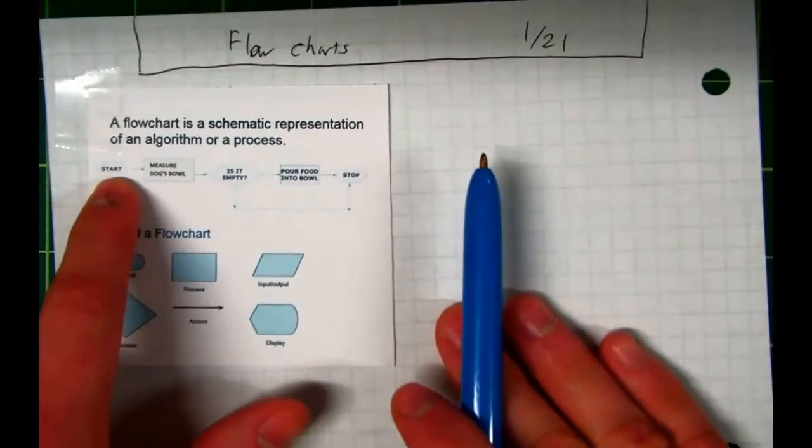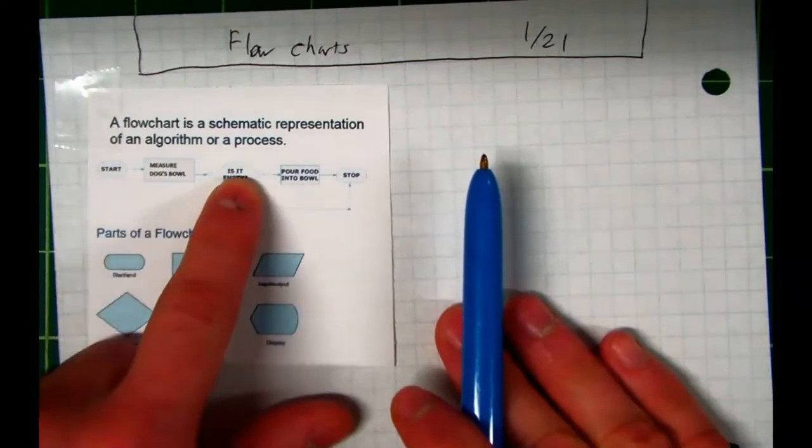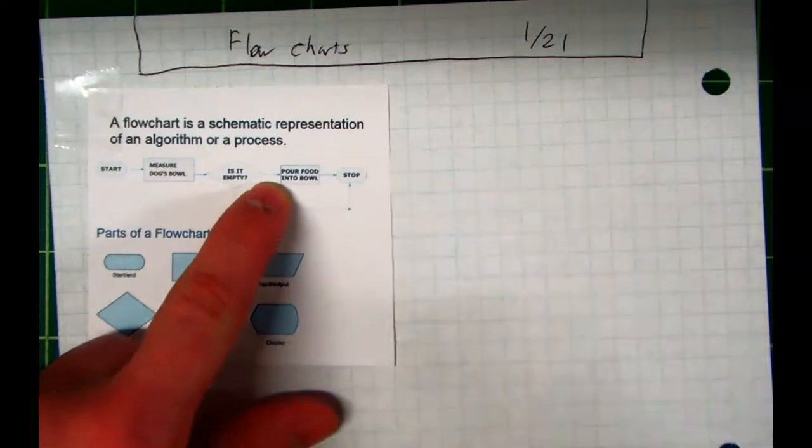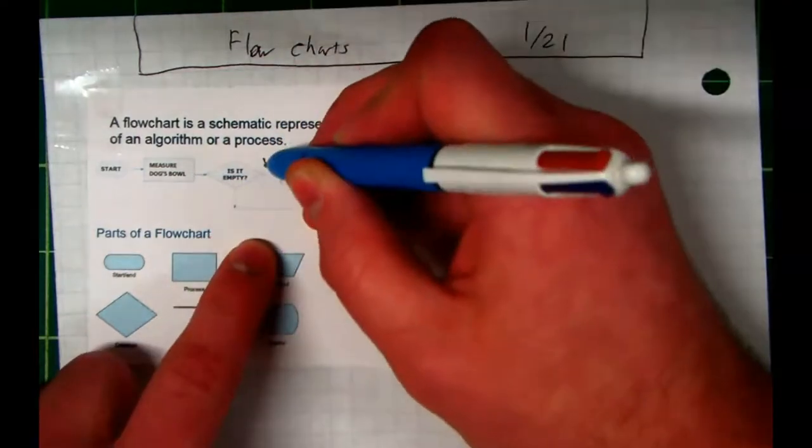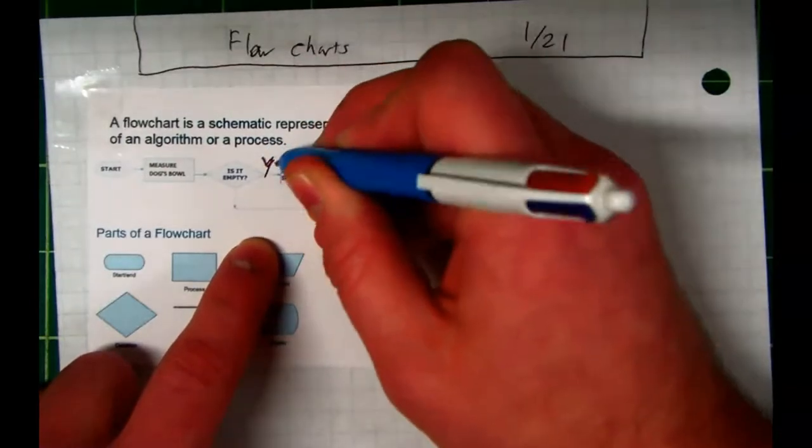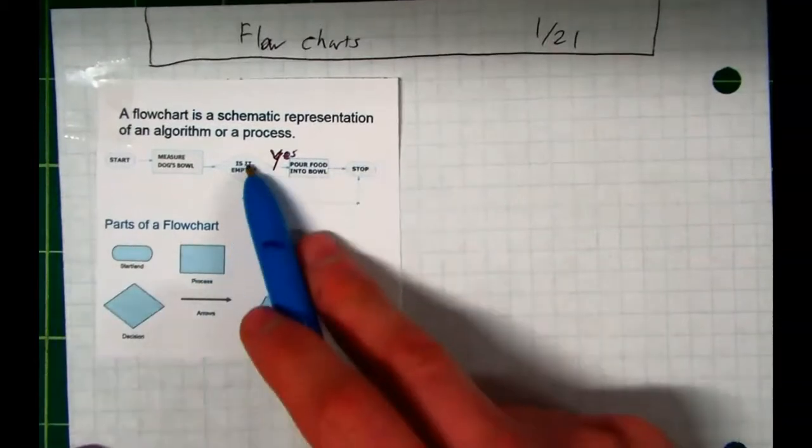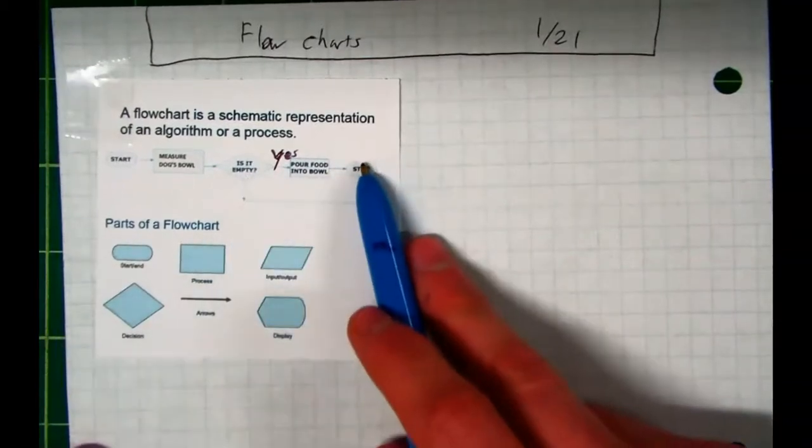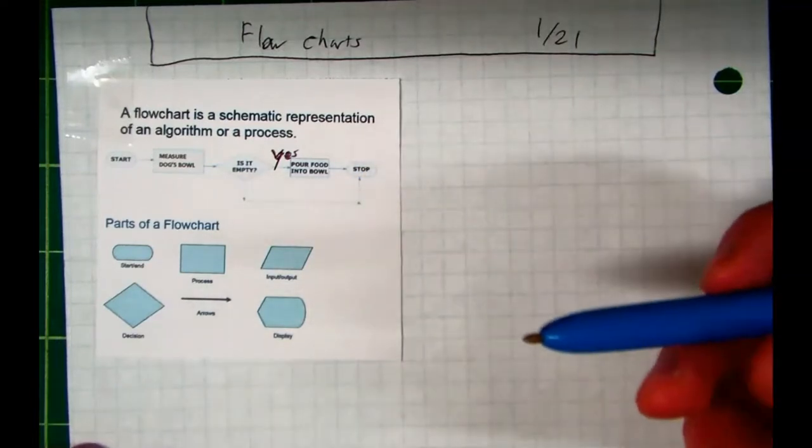So they've got a start, then they say measure the dog's bowl. Then they ask, is it empty? If yes, if it's empty, let's try to draw that Y a little bit clearer. If yes, it says pour food in the bowl, and then stop. If it's not empty, then just stop. It's a very simple flowchart, correct?